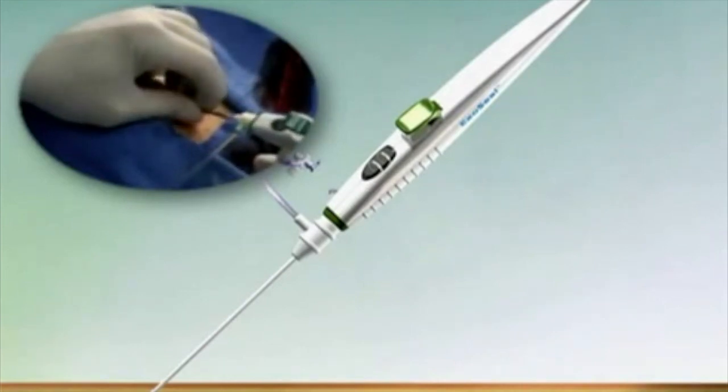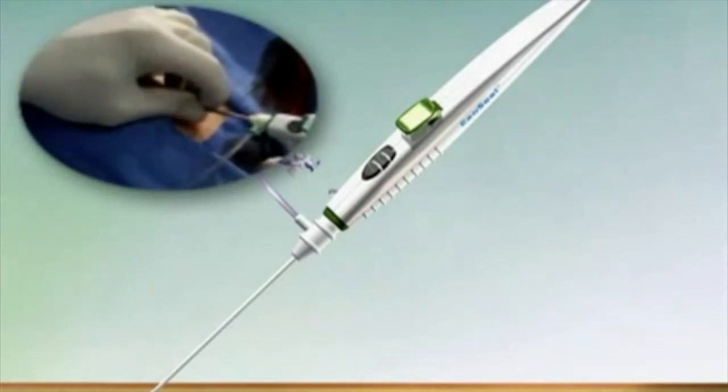The reduction in pulsatile flow is an important visual indicator that the device is approaching the correct position for plug deployment.